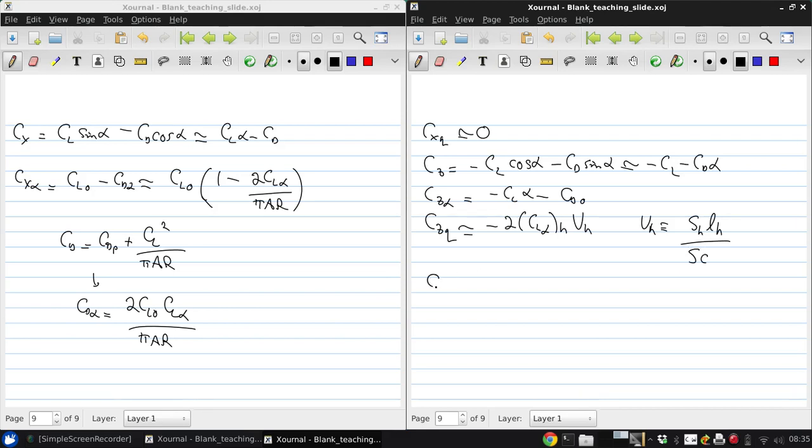And for the moment, Cmu star is equal to 2 Cm0 using the same logic that we used to determine Cxu star and Czu star. Now Cm0, this is just the y moment coefficient at the trim state and this is determined using thin airfoil theory or AVL or some other analysis technique.